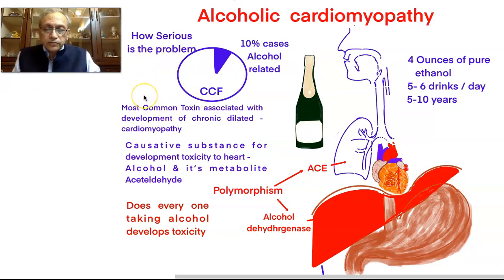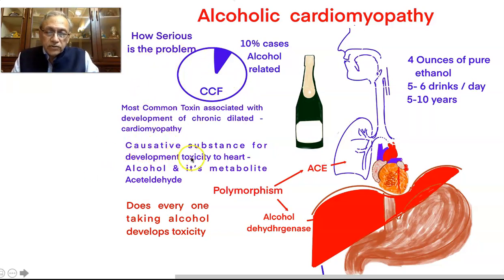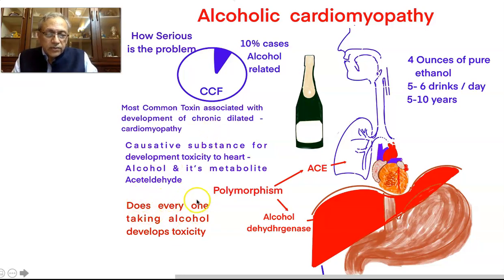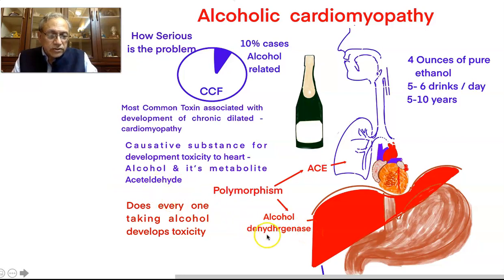What really causes the development of toxicity to the heart? These are alcohol and its metabolite acetaldehyde. But does everyone taking alcohol develop toxicity? The answer is no. Few patients get into this problem of alcoholic cardiomyopathy, and these are the cases mostly related to the polymorphism of the genes of alcohol dehydrogenase — that is, there is increased production of acetaldehyde, which is a toxic substance.